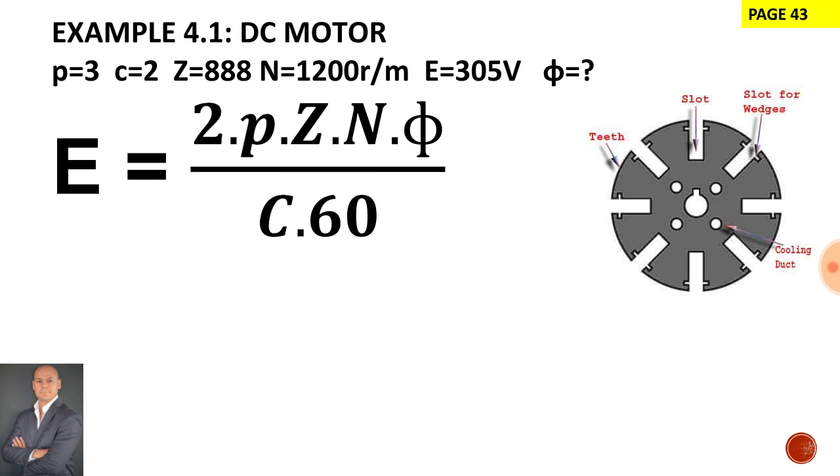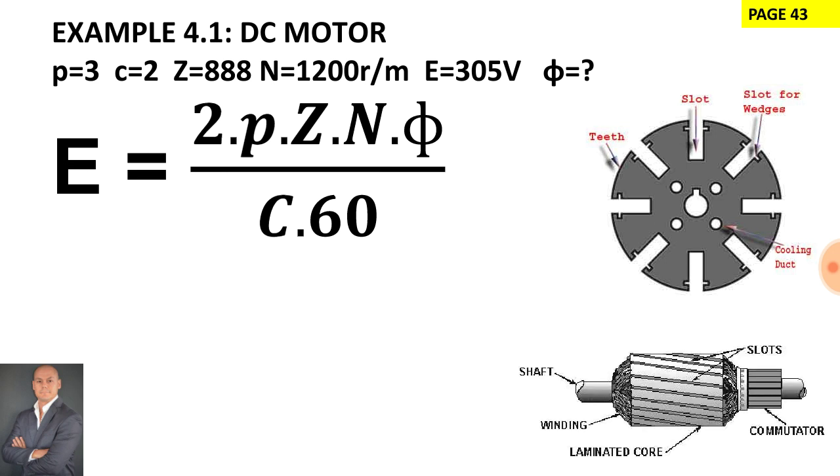Just to remind you that the armature assembly is made of thin slices of steel sheets and this is to reduce the effects of eddy current. Here we have an armature assembly to illustrate the different slots and the number of conductors per slot.